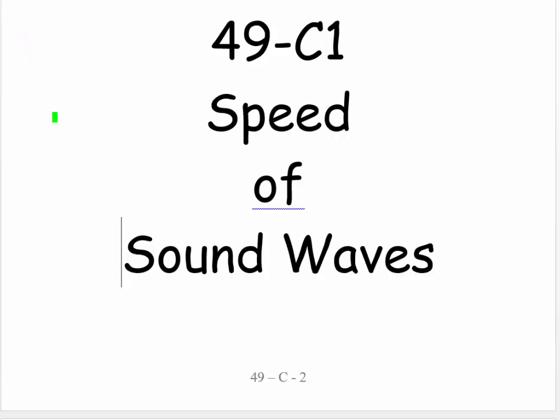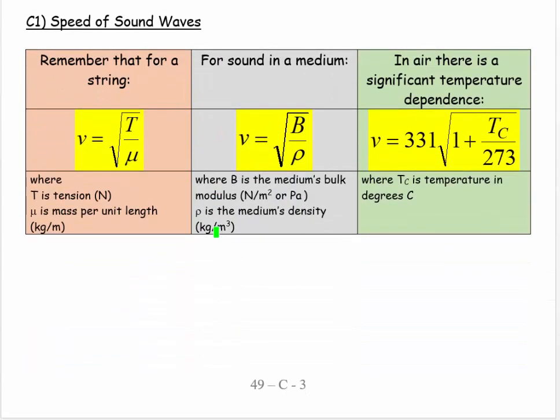Welcome. This is 49C1 and this is the speed of sound waves. So now we're dealing with sound. First bit we're going to look at is a bit of a comparison. So we did before that the speed of a wave on a string is going to be the square root of T, which was the tension, over mu, which was the mass per unit length. And we're going to give you another equation here which says that for air, the speed of sound propagating through air is equal to the square root of the bulk modulus over the density.